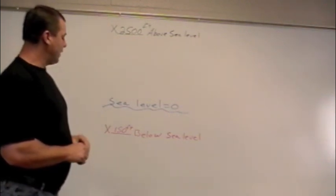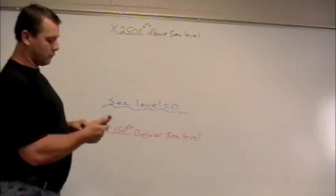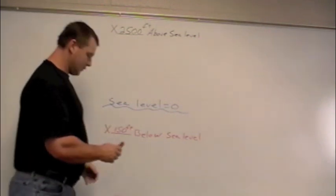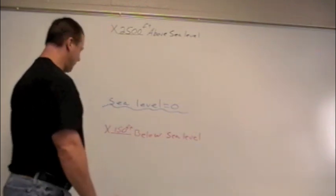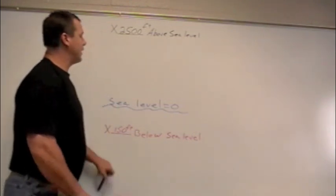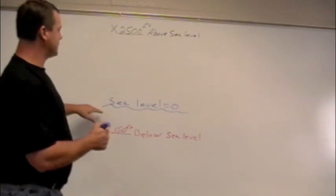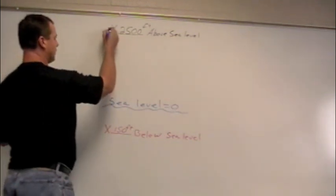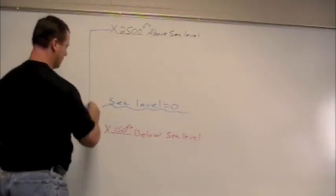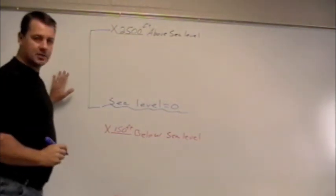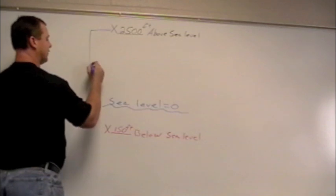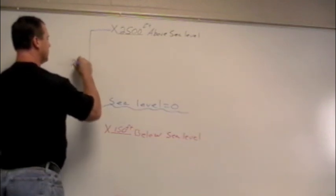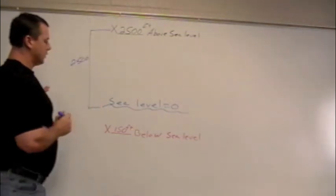So when we start out, we're looking at 2,500 feet above sea level. So how far is it from 2,500 feet above sea level just to sea level? So if I'm just going from here to here, what's the distance we're looking at? Well, since it's 2,500 feet above sea level, this distance is going to be 2,500 feet.